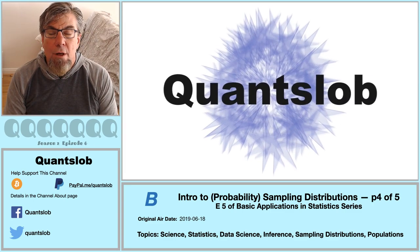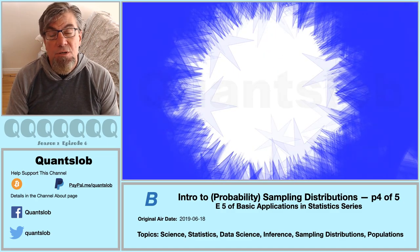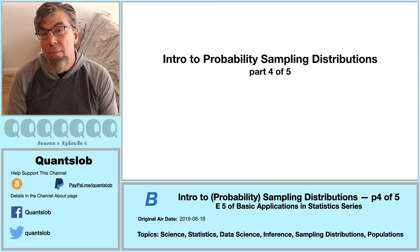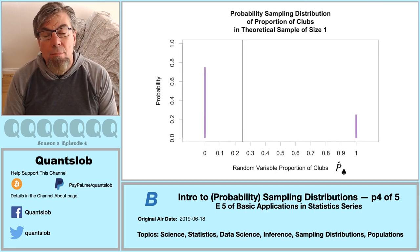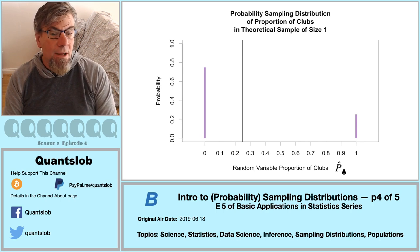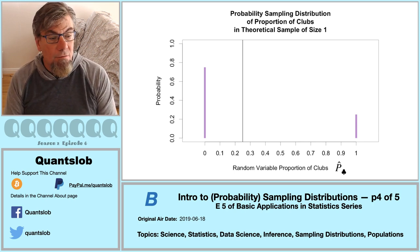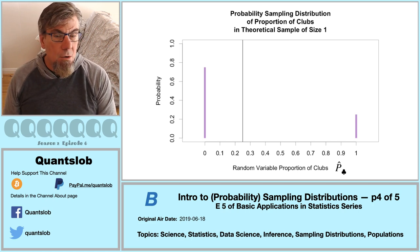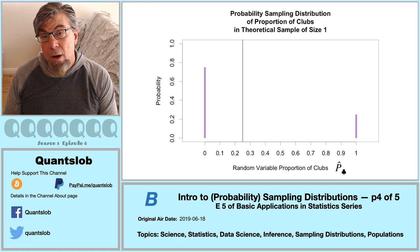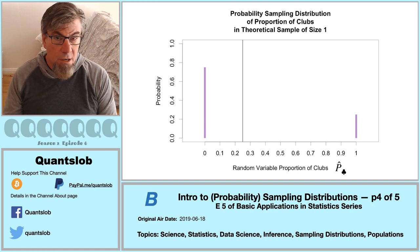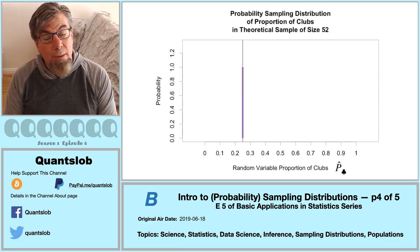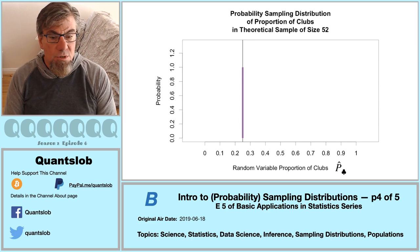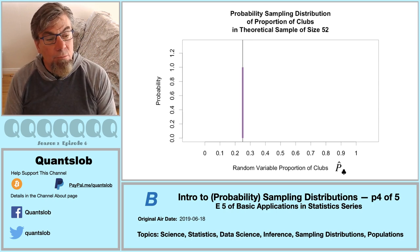Greetings and welcome to another installment of QuantSlob. This is fifth in our basic application series — part four in our mini-series on probability sampling distributions. Quick inventory: starting with our population of 52 cards, we looked at the sampling distribution of the sample proportion of cards suited as clubs in our theoretical sample, specifying that theoretical samples had to contain unique cards — no duplicates. We learned that at the limit, when we sampled the entire population — all 52 cards — the sampling distribution collapsed. The probability that one-fourth of our sample is suited as clubs is one; no other proportions are possible.